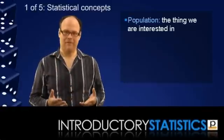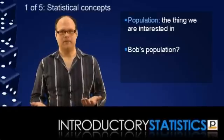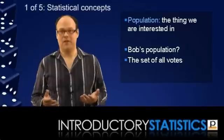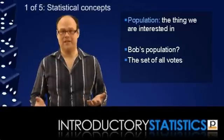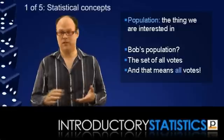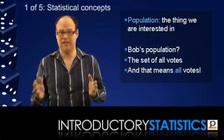Now, the name that we give to the thing that we are interested in and would like to explain is the population. So what's Bob's population? Well, Bob's really interested in all the votes, because if you know how all the votes are going to go, then he's already answered his question. So Bob's population is the set of all votes. It's all votes across the entire federal election, and that's a rather big population, and Bob's going to want to know as much as he can about it.